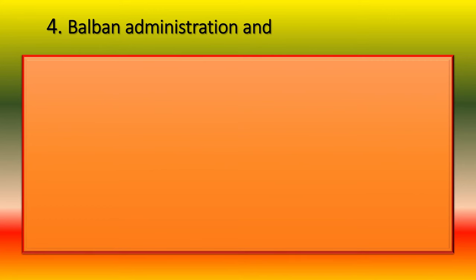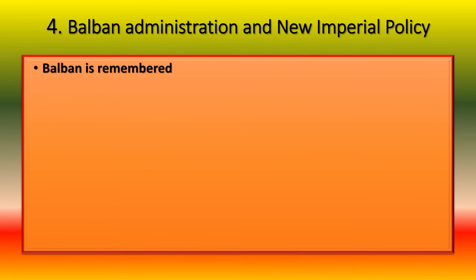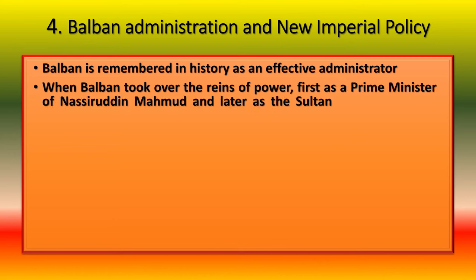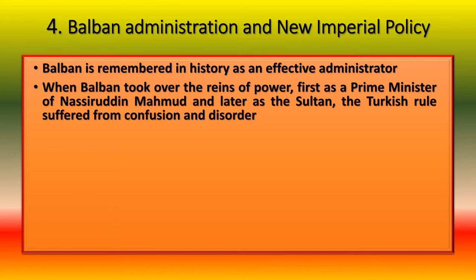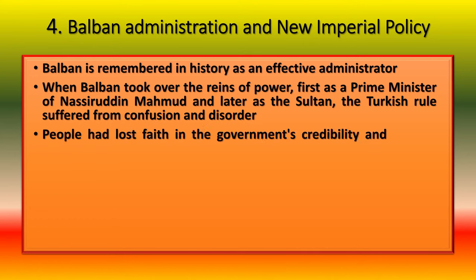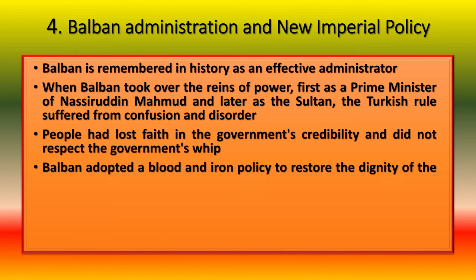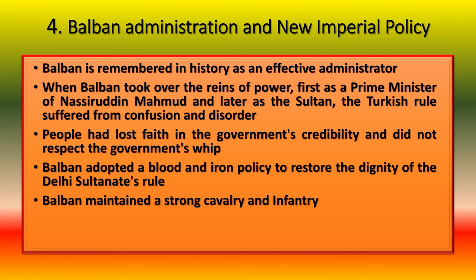Balban is remembered in history as an effective administrator. When he took over — first as Prime Minister of Nasiruddin and later as Sultan — Turkish rule suffered from confusion and disorder, and people had lost faith in the government's credibility. Balban adopted a blood and iron policy to restore the dignity of the Sultanate's rule. He maintained a strong cavalry and infantry, and appointments to the post of commandants were based on merit only.